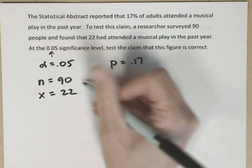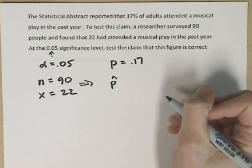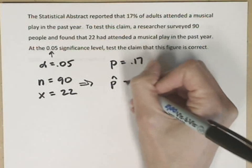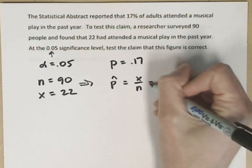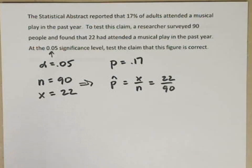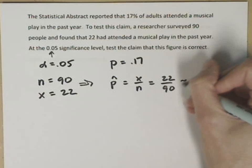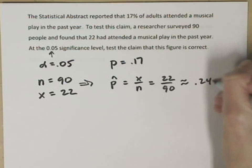When I put the n and the x together, that gives me P-hat, which is my sample percentage or sample proportion. This is x over n, 22 over 90. I can either leave it as a fraction, but I think it's easier to work with as a decimal. So 22 divided by 90 gives me .244 repeating, so let's call that about .244.